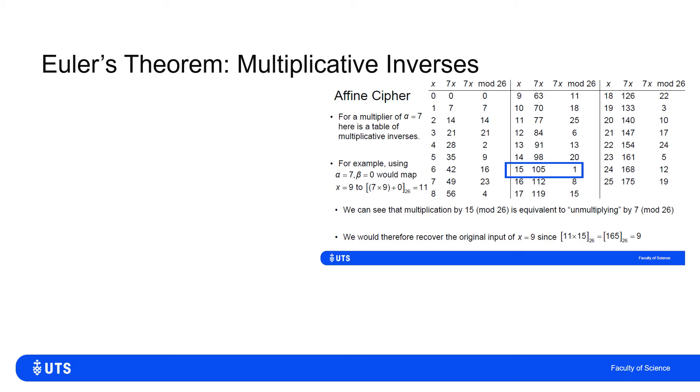What we established in the previous video was that I wrote down the integers 0 to 25, multiplied each of them by 7, and then worked out the remainder of 7 times that integer mod 26. And we saw that by the time we got to 7 times 15, I got up to 105, and the remainder of 105, when divided by 26, was 1. So I would say that 7 times 15 was equivalent to multiplication by 1 mod 26.